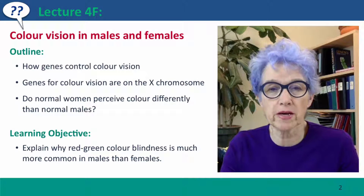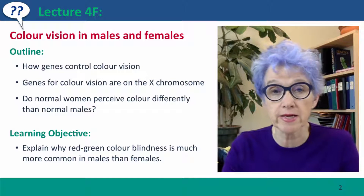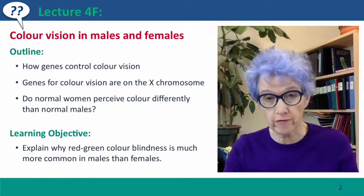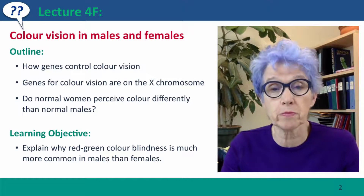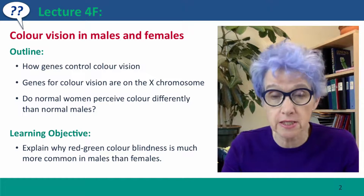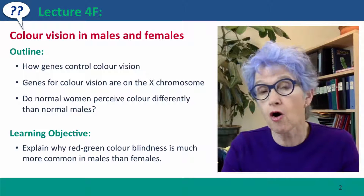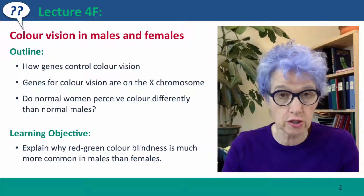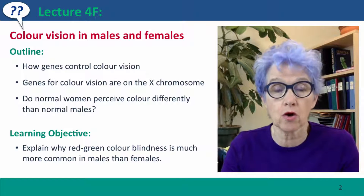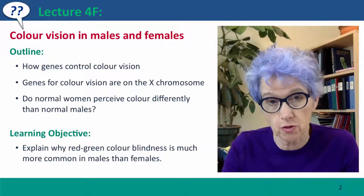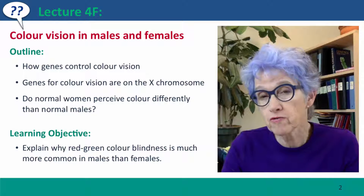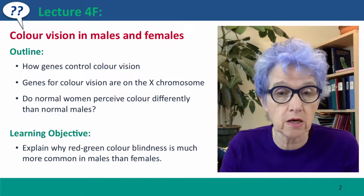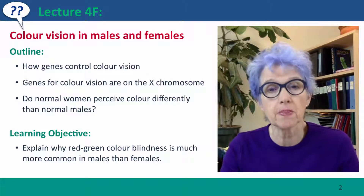Hi, everyone. Welcome back to Useful Genetics. This is Lecture 4F, where we're going to talk about a particular example of a genetic problem caused by an allele on the X chromosome, and that's the color vision defect called red-green colorblindness.